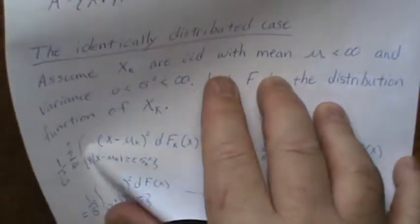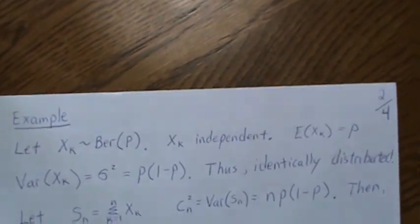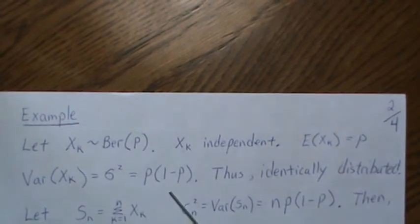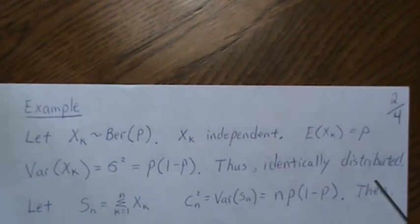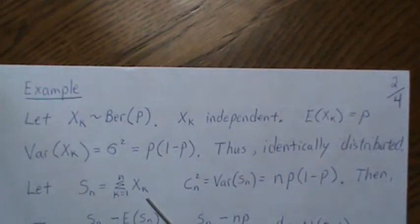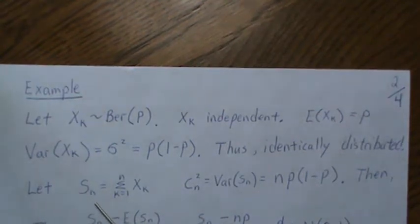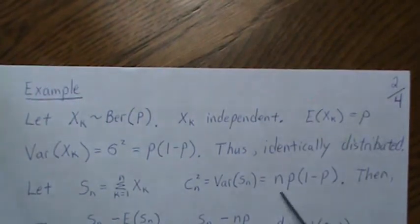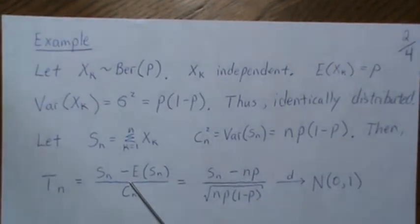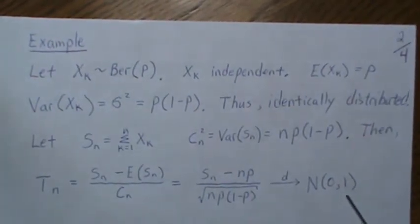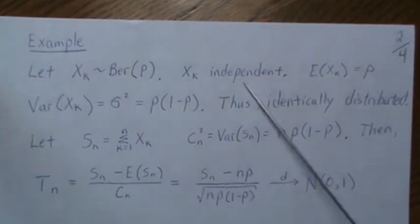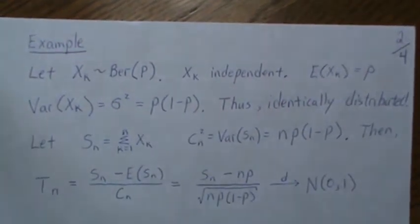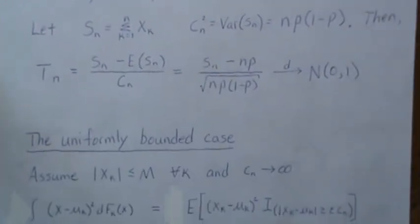Here's a quick example. Let X_k be Bernoulli — the X_k are independent with mean p and variance pq = p(1-p), so they're identically distributed. Let S_n be the partial sum and c_n squared be the variance npq = np(1-p). Then the normalized quantity converges in distribution to a standard normal — which is exactly what the Lindenberg condition gives us, consistent with the iid CLT.